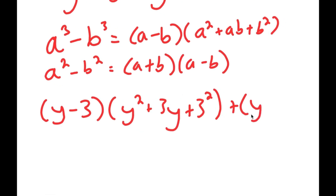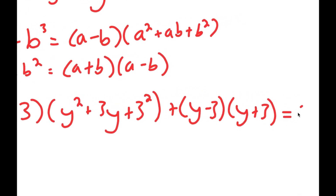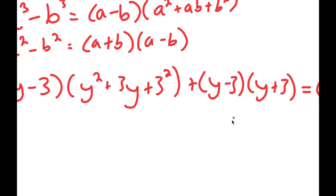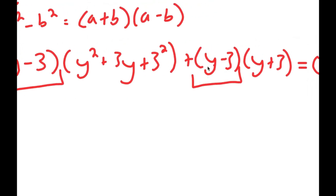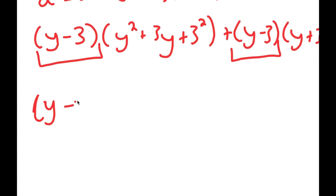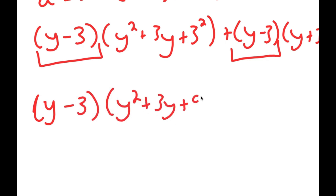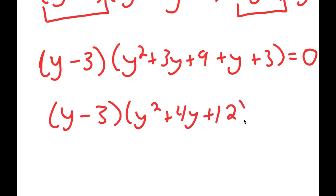And then I have this plus y minus 3 times y plus 3, equals 0. From here, I have a common factor of y minus 3 on both terms. So if I factor out y minus 3, I get y minus 3 times the quantity y squared plus 3y plus 9 plus y plus 3, all equal to 0. This turns into y minus 3 times y squared plus 4y plus 12 equals 0, after adding up all the like terms.